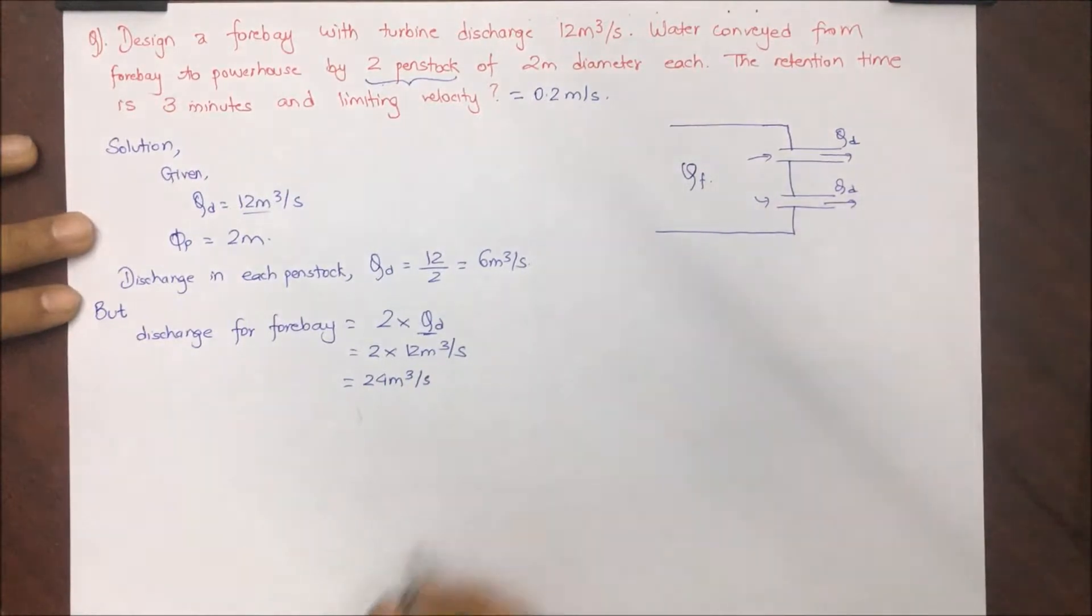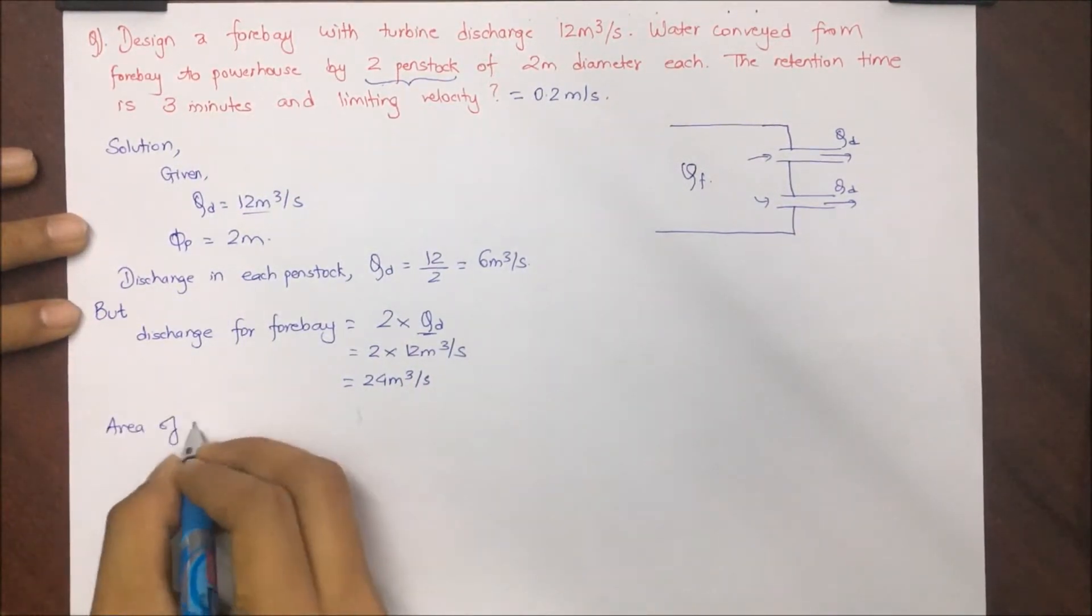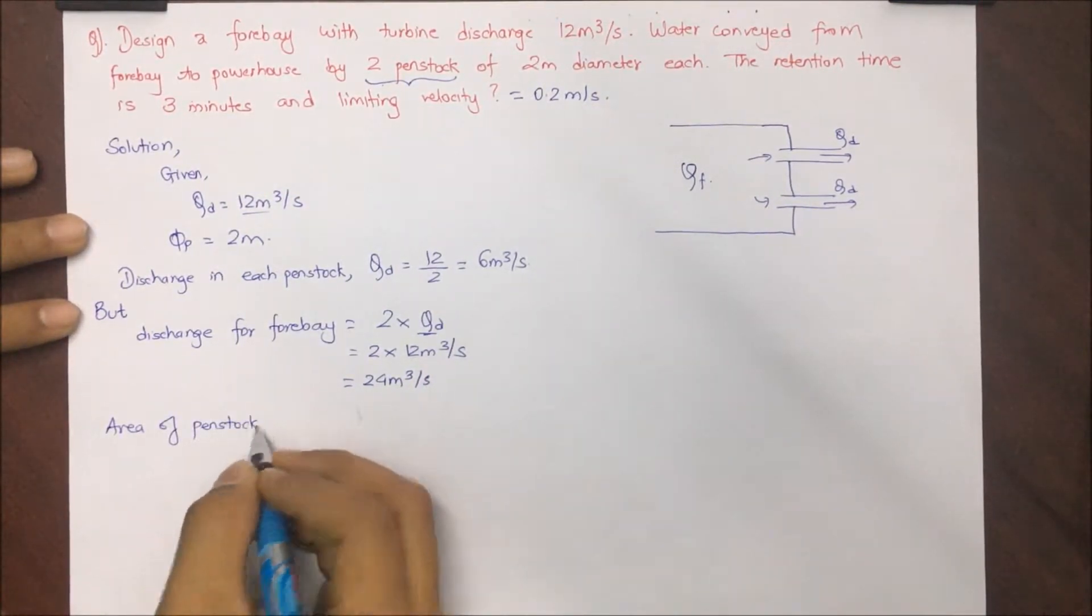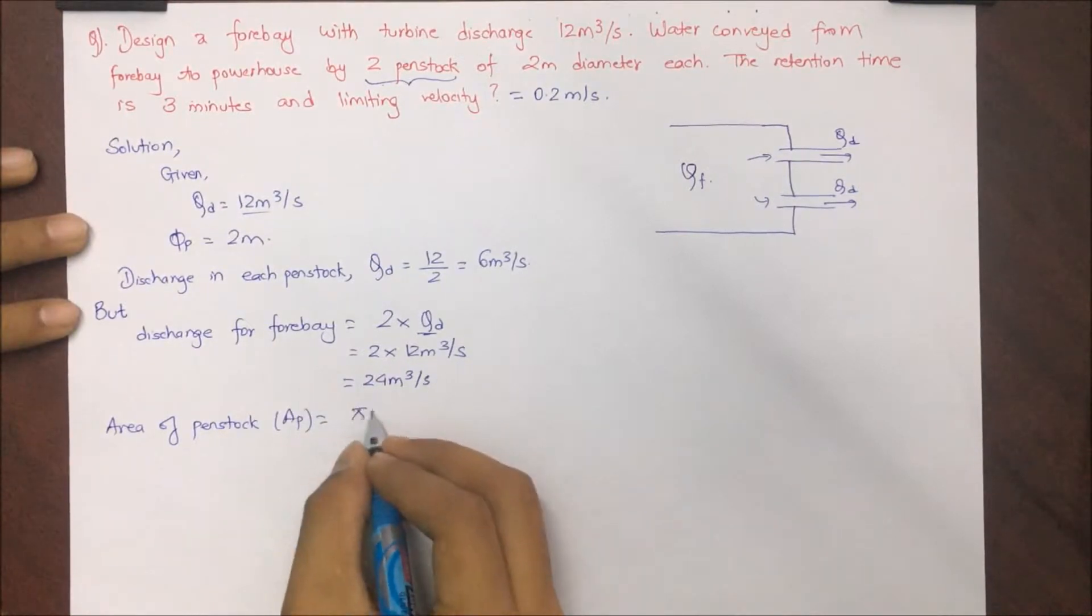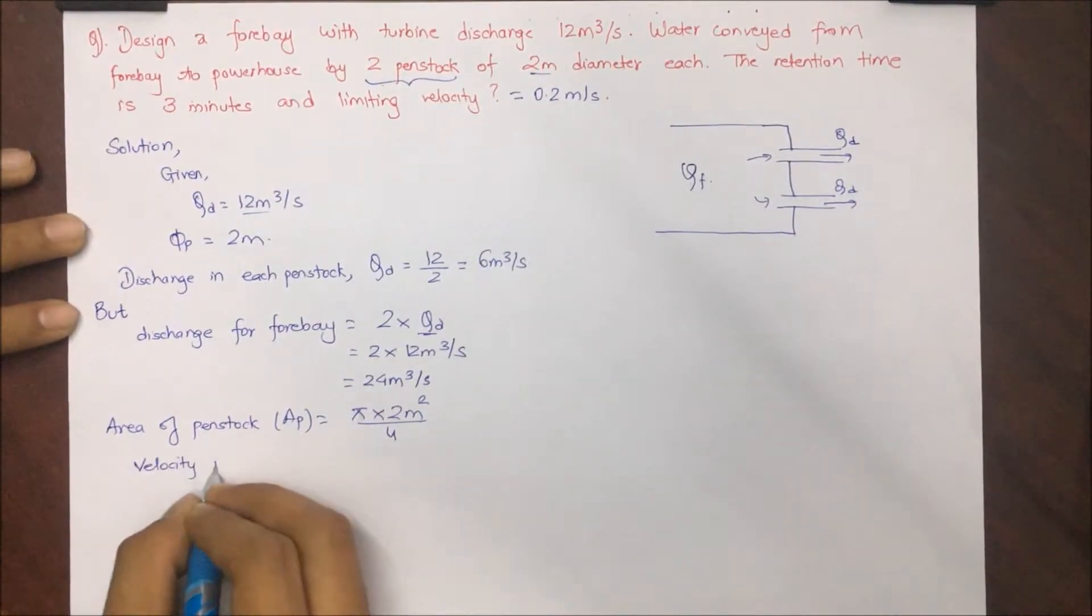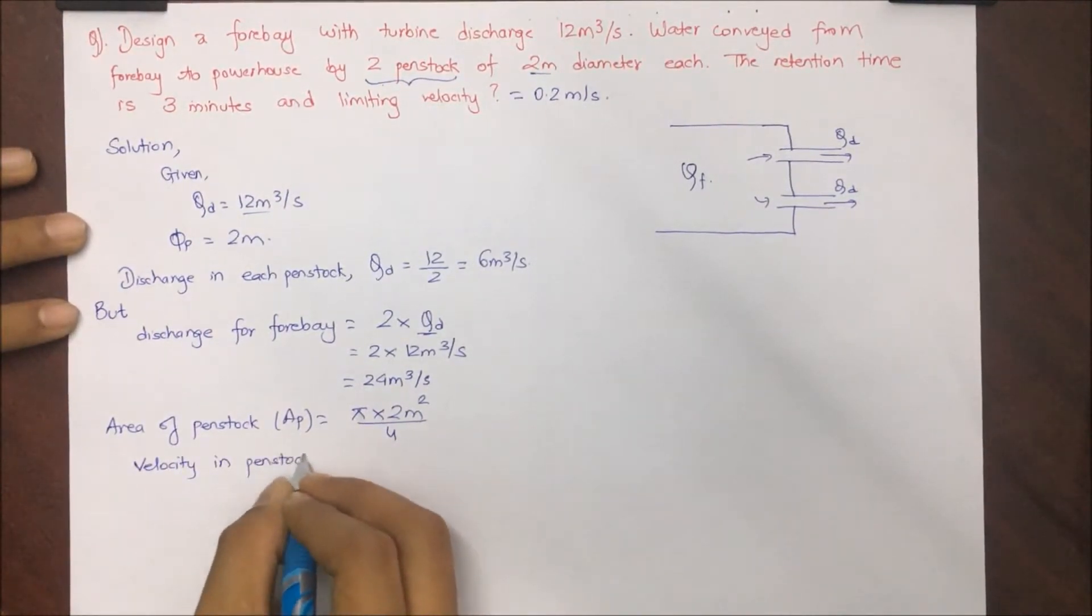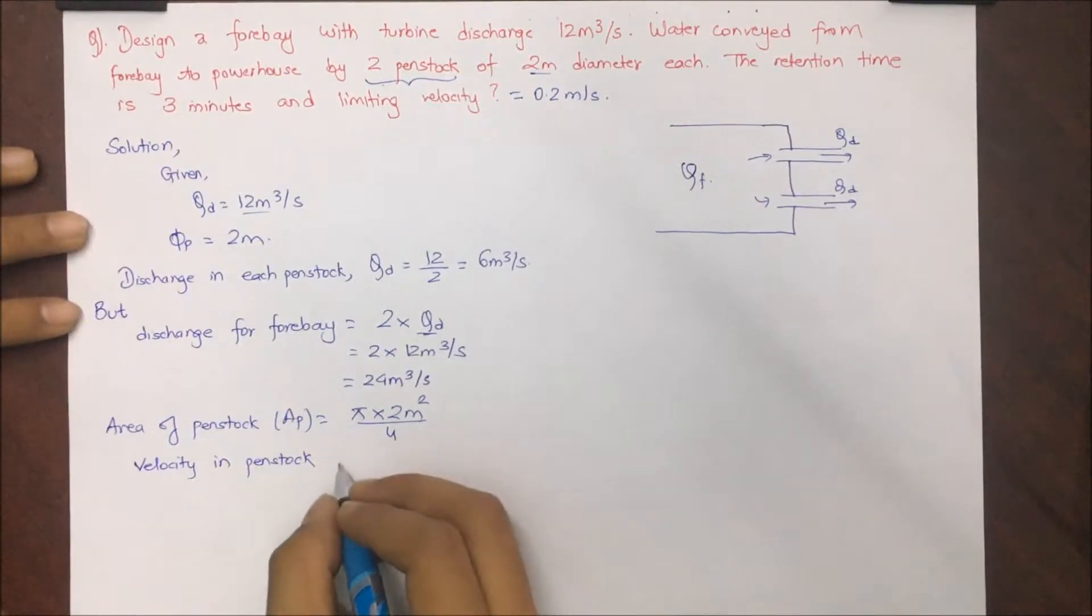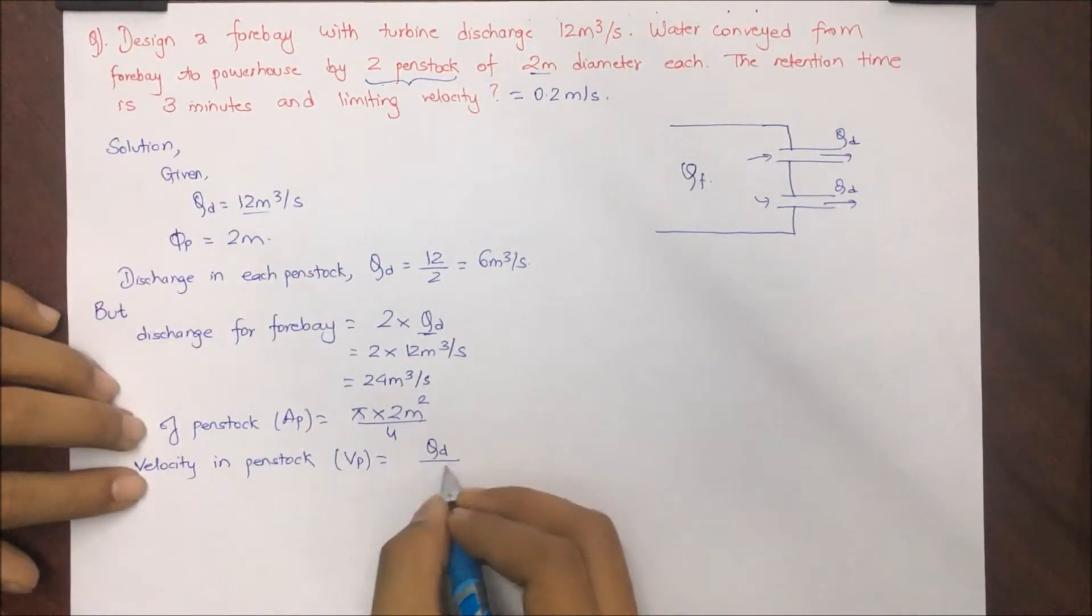Area of penstock, each penstock, that is Ap equals pi d square by 4. And d is 2, so pi into 2 square by 4.